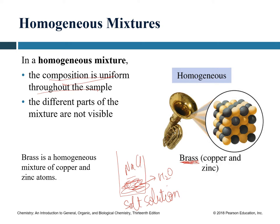Another example of a homogeneous mixture is brass — a homogeneous mixture of copper and zinc. Pure brass will always have the same amount of copper and zinc atoms. Another characteristic of a homogeneous mixture is that the different parts are not visible: in a salt solution you cannot see where the salt is and where the water is; in brass you cannot distinguish which part is copper and which is zinc.